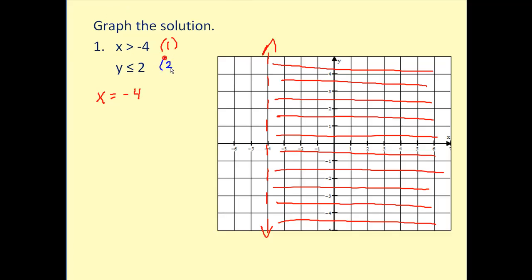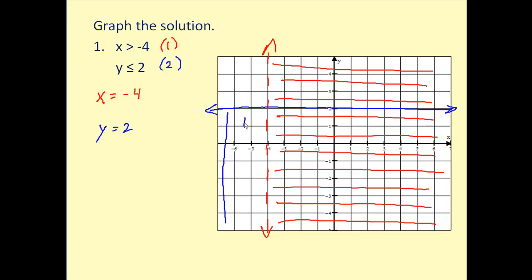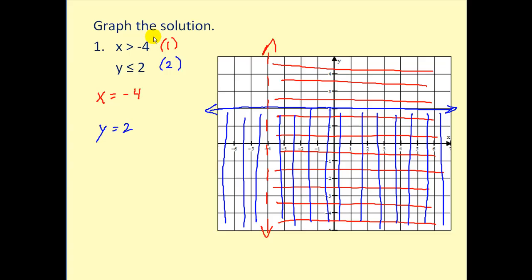Now we need to graph the solution to the second linear inequality and determine the double shaded region. Here we have y is less than or equal to two, so we need to graph the line y equals two. It will be solid because the line will be part of this solution. y equals two is a horizontal line through y equals two. Because it says y is less than or equal to two, we shade below the blue line. The solution to the system is the region shaded by both linear inequalities — the region shaded both in red and in blue.